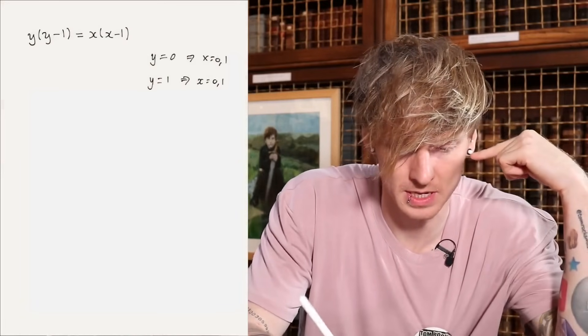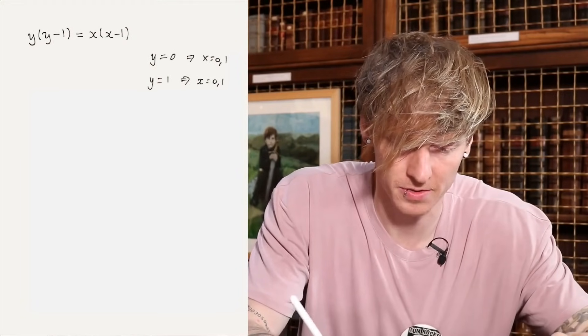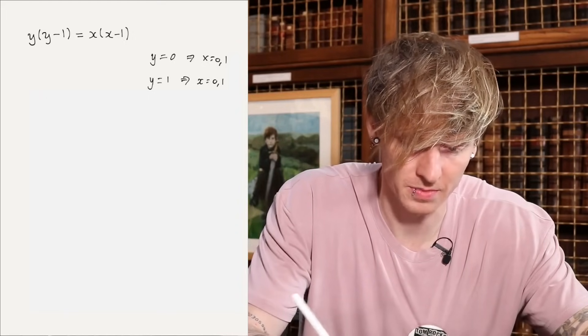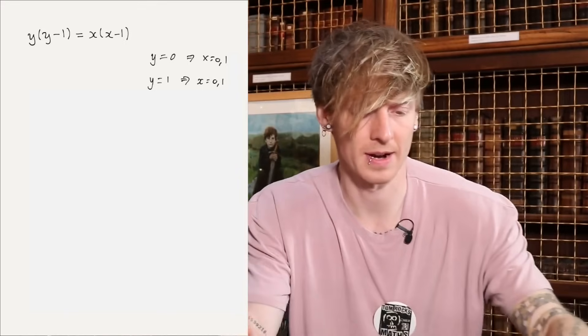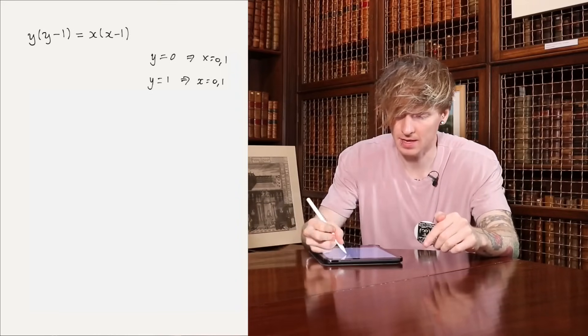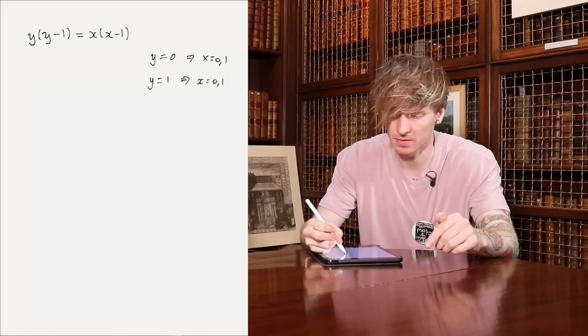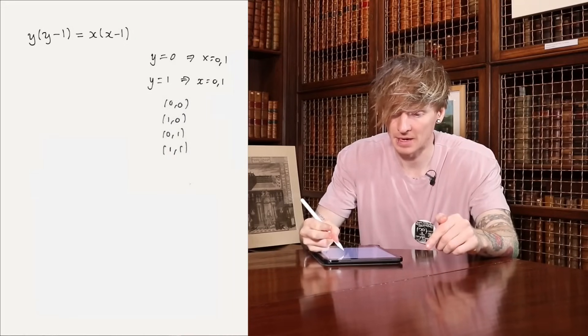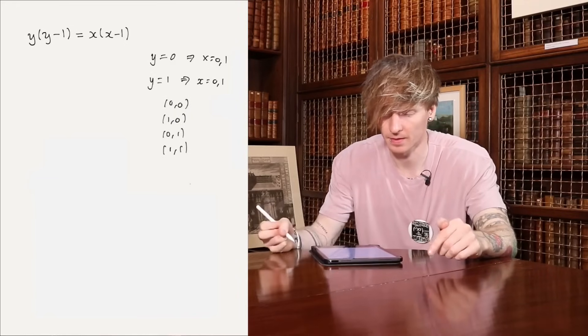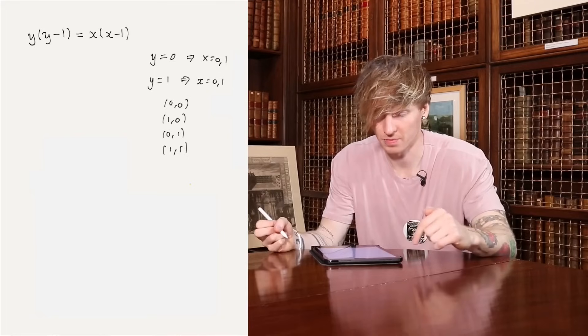Okay, let's think about this. I'm going to make notes. Obviously y being zero would make the left-hand side zero, so x would have to be zero or one. Likewise, if y was one, x would also have to be zero or one. And the other way around — if x is zero or one, y also has to be zero or one. So that gives me points of interest: (0,0), (1,0), (0,1), and (1,1). I think all of those points would satisfy this equation.